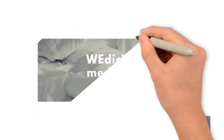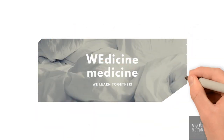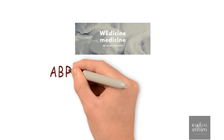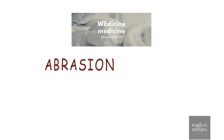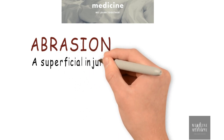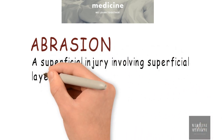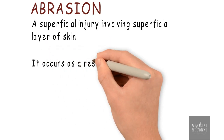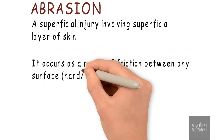Welcome to Medicine Medicine. This session is all about injury and we are discussing about abrasion today. Abrasion is a superficial injury involving the superficial layer of skin. It occurs as a result of friction between any surface and skin.